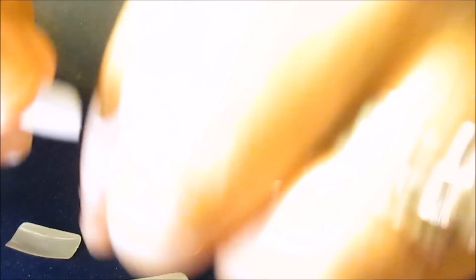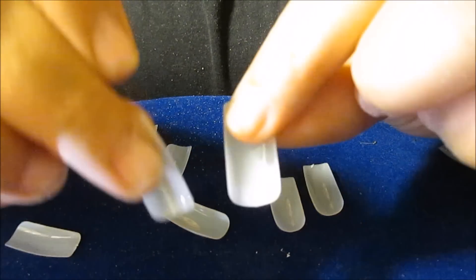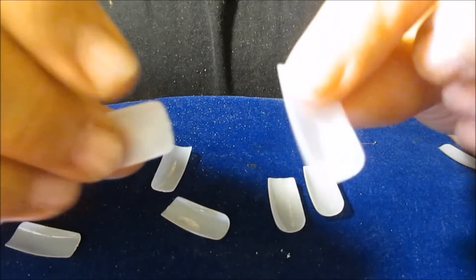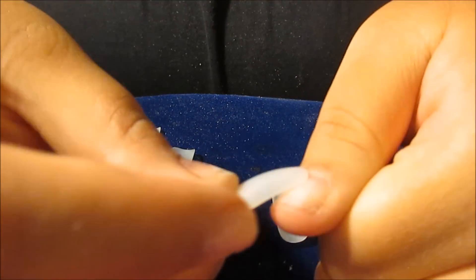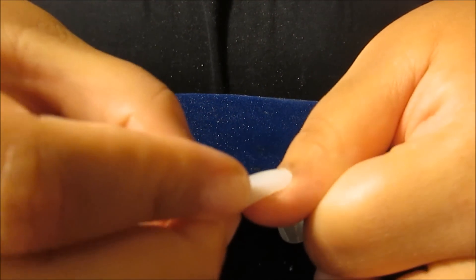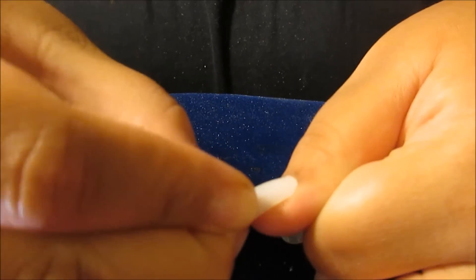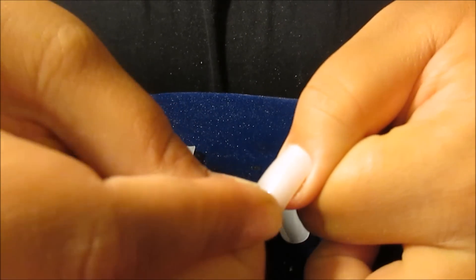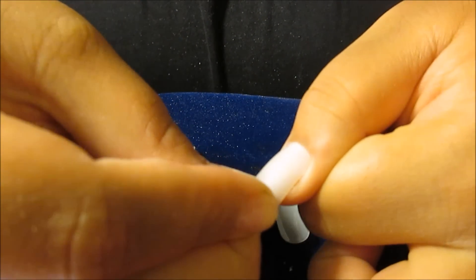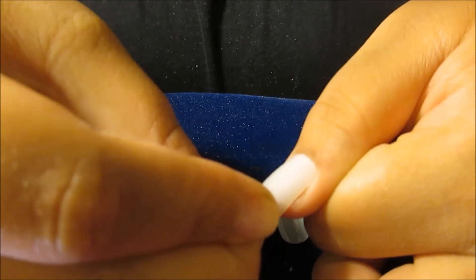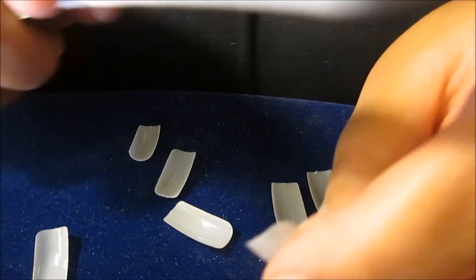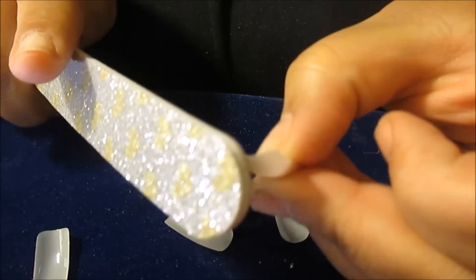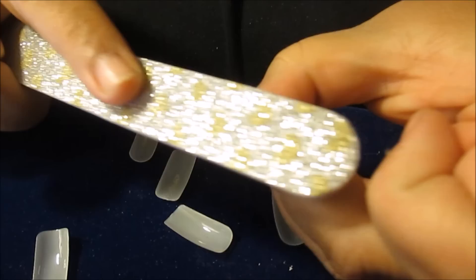Alright guys so first what you want to do is get your nails ready. So I got my nails ready and I'm going to start off with my thumbs. So first what I like to do before I get started is I like to take the nail that I'm about to use and push it up against my cuticle. And what this does is make the nail look a lot more natural. So that way when you put the nail on it's going right up against your cuticle.